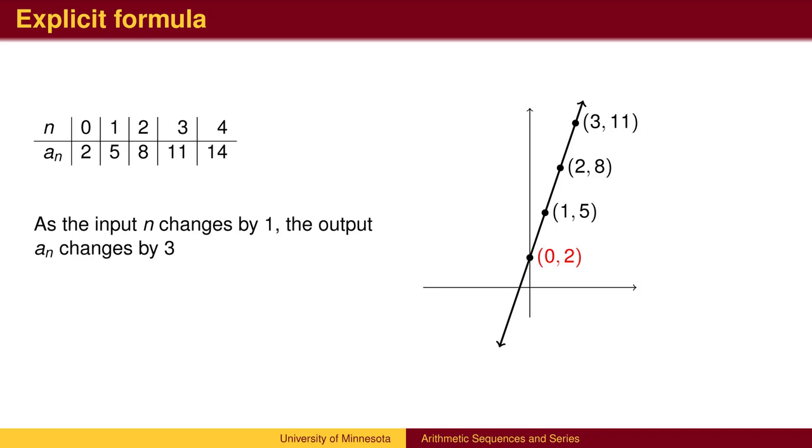The sequence is arithmetic because as we step forward to the next term, the output changes by 3. The concept is the same as the slope of a line. The sequence is equivalent to a line that has a slope of 3 and an intercept of 2. The formula for the output a_n is now the slope-intercept form of a line: a_n equals 3n plus 2, which is similar to y equals 3x plus 2.